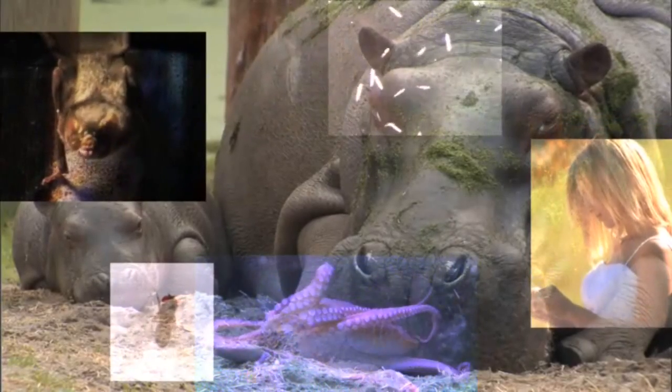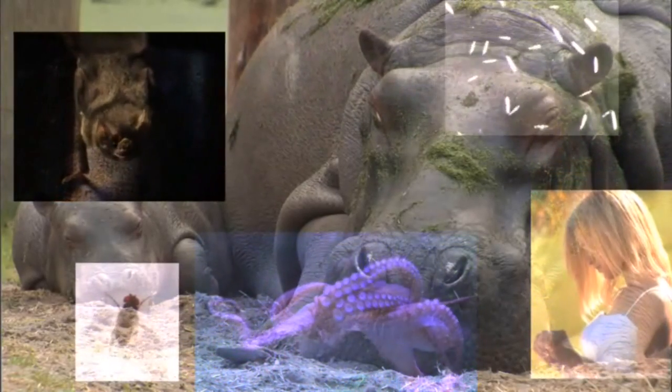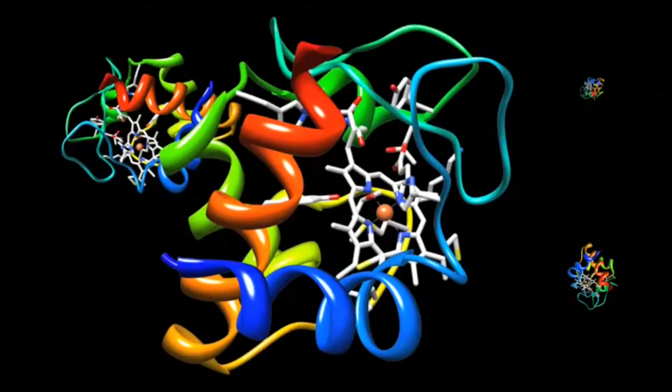Some proteins are found in every living eukaryote on Earth. Fruit flies and bats, octopi and hippos, protoctists and humans. One such protein is cytochrome C.